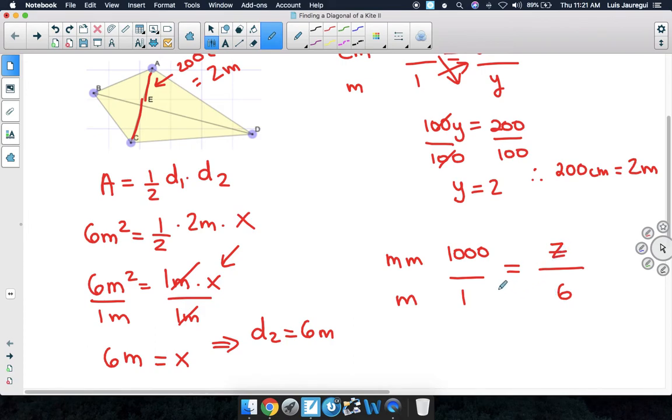Let's solve for Z now by cross-multiplying. We have 1 times Z is simply Z, and 1,000 times 6 is 6,000. That means that the length of 6 meters is the same as 6,000 millimeters.